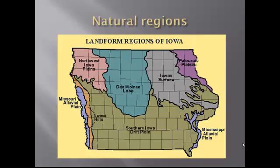Finally, in the far southeast is the Mississippi Alluvial Plain, including the lower reaches of the Iowa and Cedar Rivers. All these regions shape the possibilities of life of all kinds — botanical life, biological life, human life, agricultural and urban life in Iowa. This is the foundation on which Iowa culture and life is built.